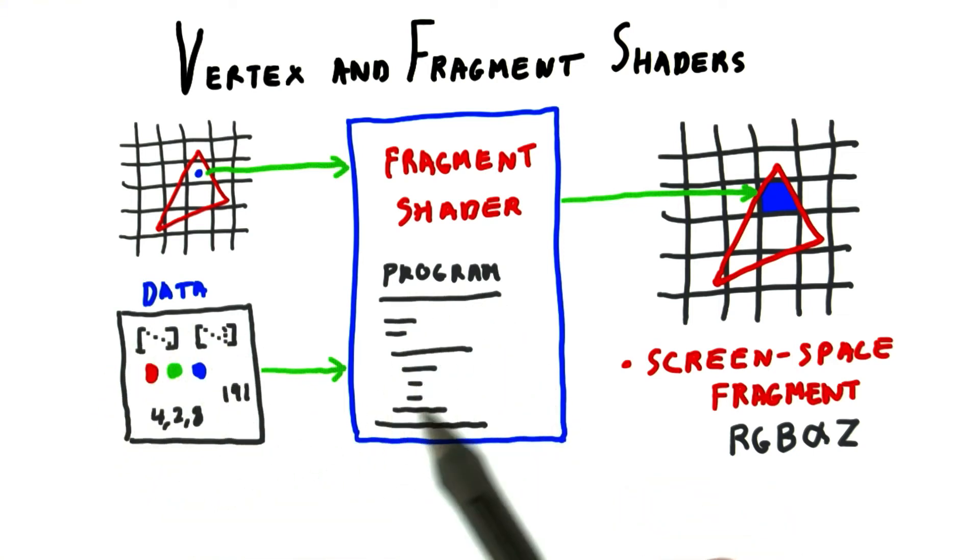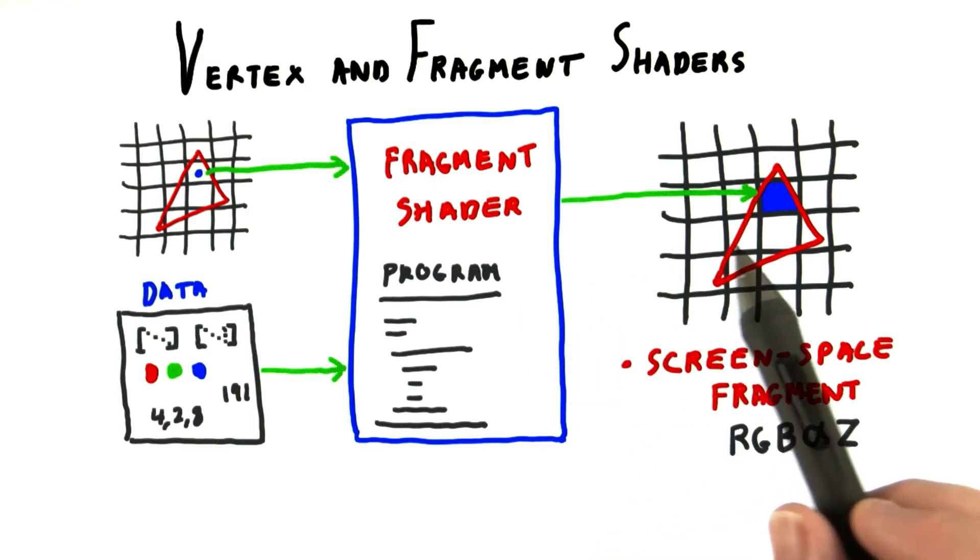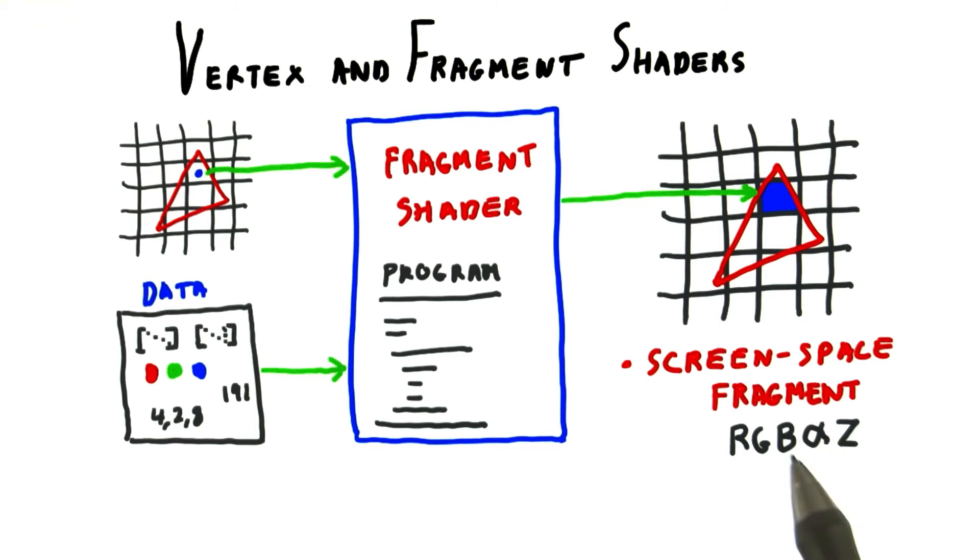The fragment shader's program is run, and the output, not surprisingly called a fragment, is typically a color and a z-depth, and possibly an alpha if you're using transparency.